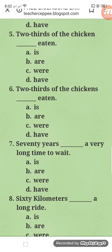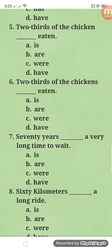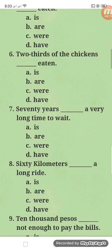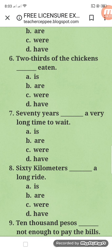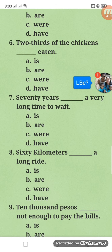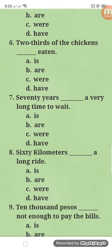For number six, 'were eaten' is also acceptable since there's no time expression like 'yesterday' or 'last night,' so it can be present or past form. Also, we cannot say 'have eaten' here because it is in an active sentence — letter D would only be correct if the sentence were in passive form. So the answers for number six are B and C.